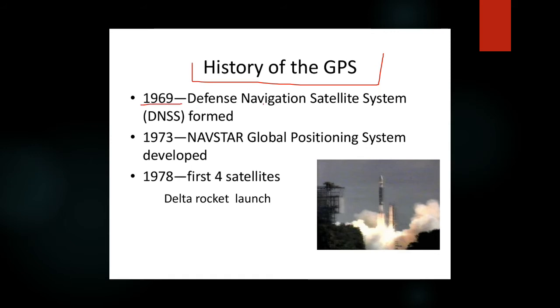In 1969, the Defense Navigation Satellite System was formed. After 1973, Navstar, which was the global positioning system's original name, was developed. For the first time in 1978, four satellites were launched using a Delta rocket.